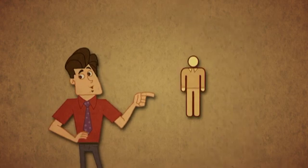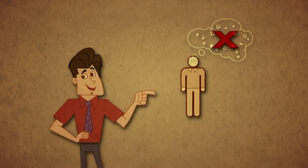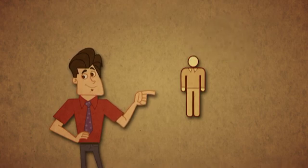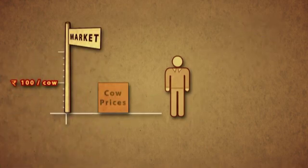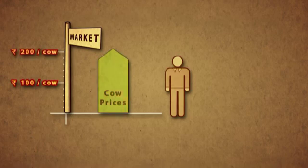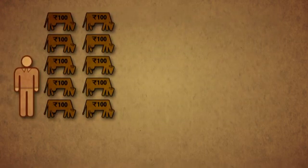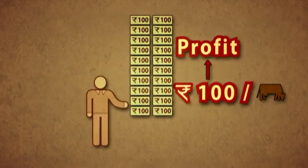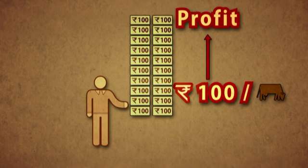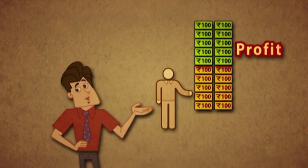But what about you? If you're right and mad cow disease does not break out, let's see what position you'll be in one year from now. One year from now, the price of cows in the open market may even soar to 200 rupees per cow. This means that you will buy his cows for 100 rupees per cow and sell them in the open market for 200 rupees, making a profit of 100 rupees per cow, or 1,000 rupees on an investment of 1,000 rupees.